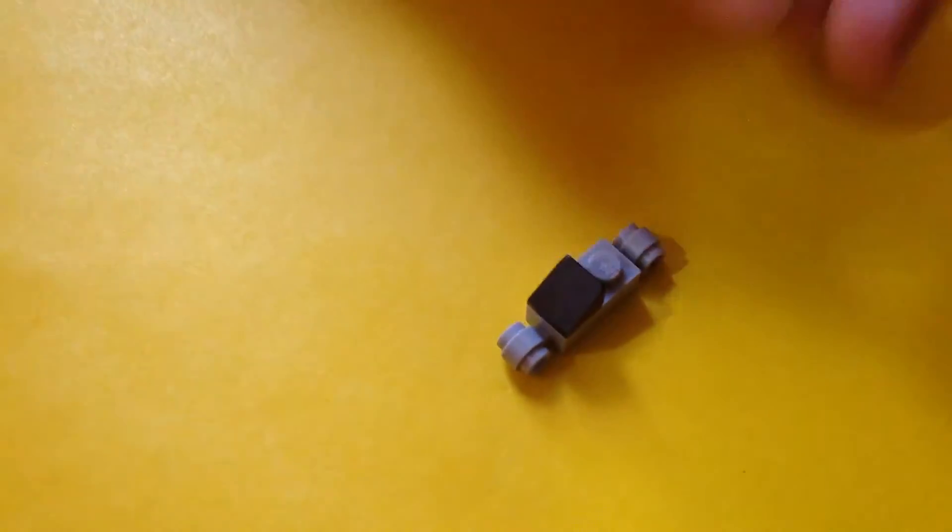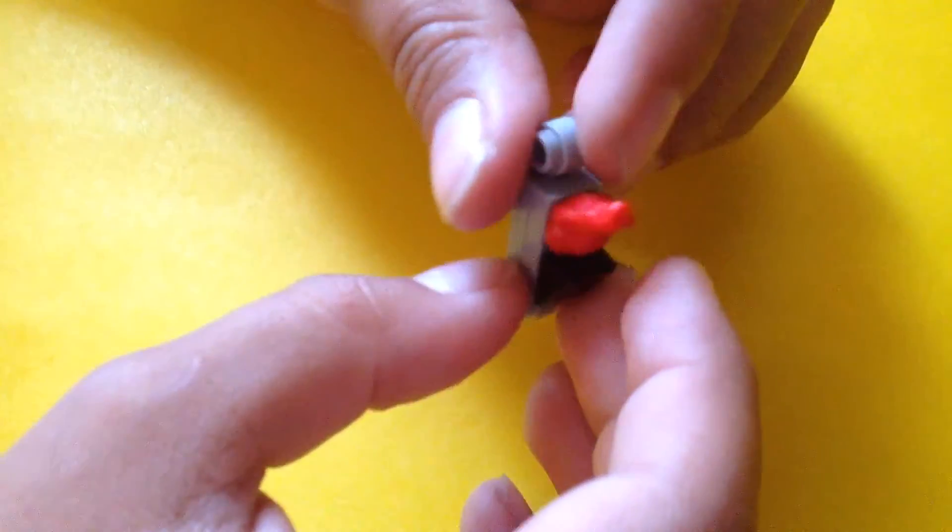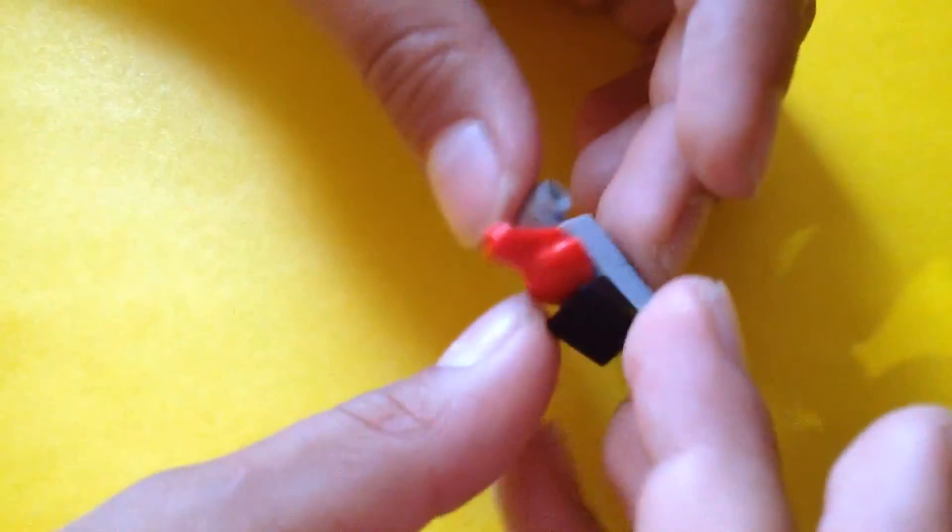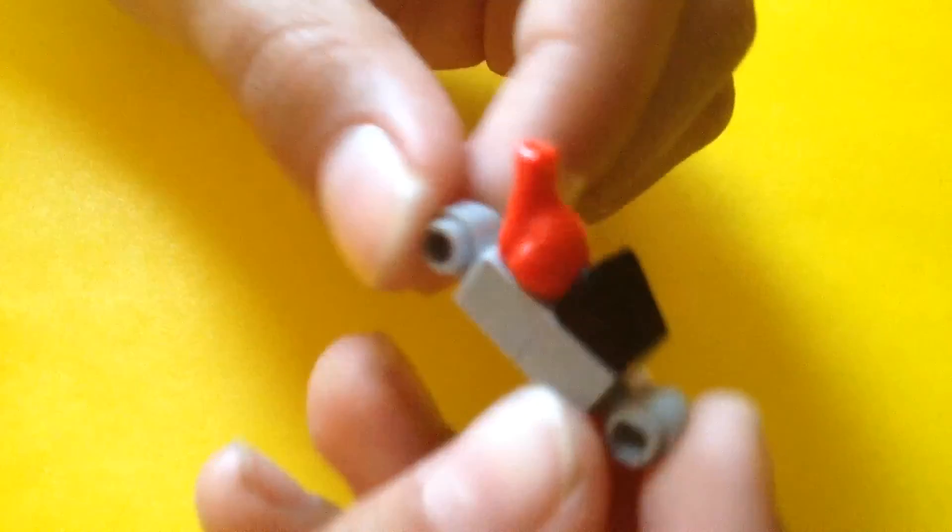But where does the passenger go? Well, it goes on the back. The only problem with this is he can only be looking backwards if he's a frog. I couldn't work out a way to make him look forward. So, this is the best I've got.